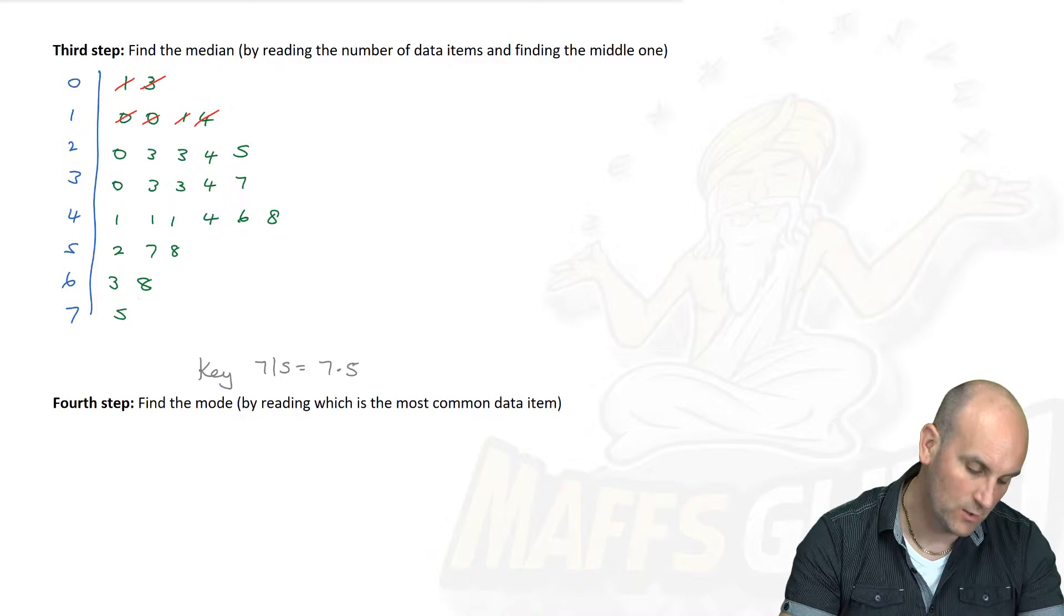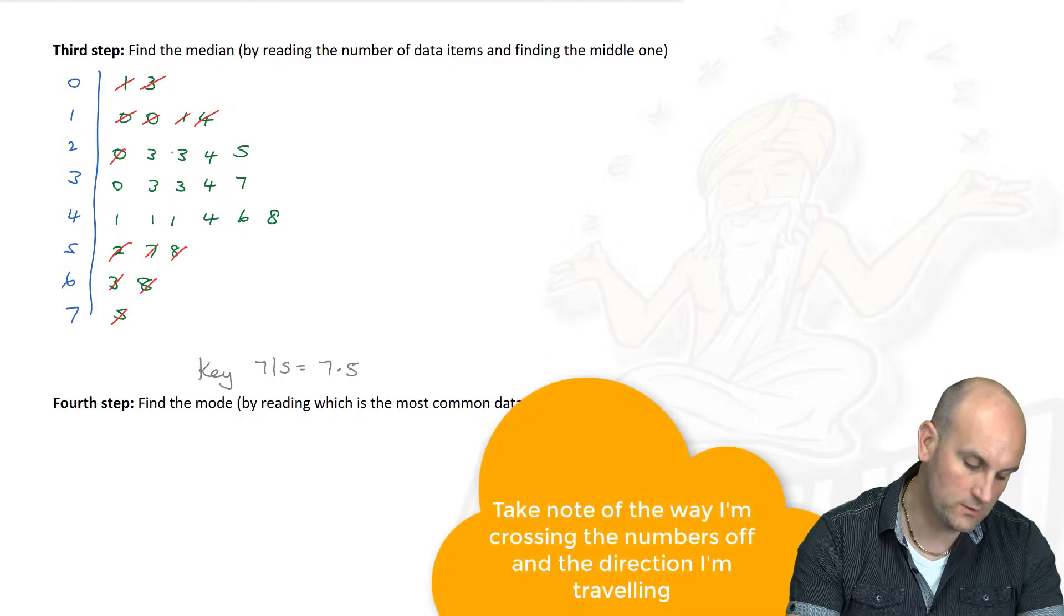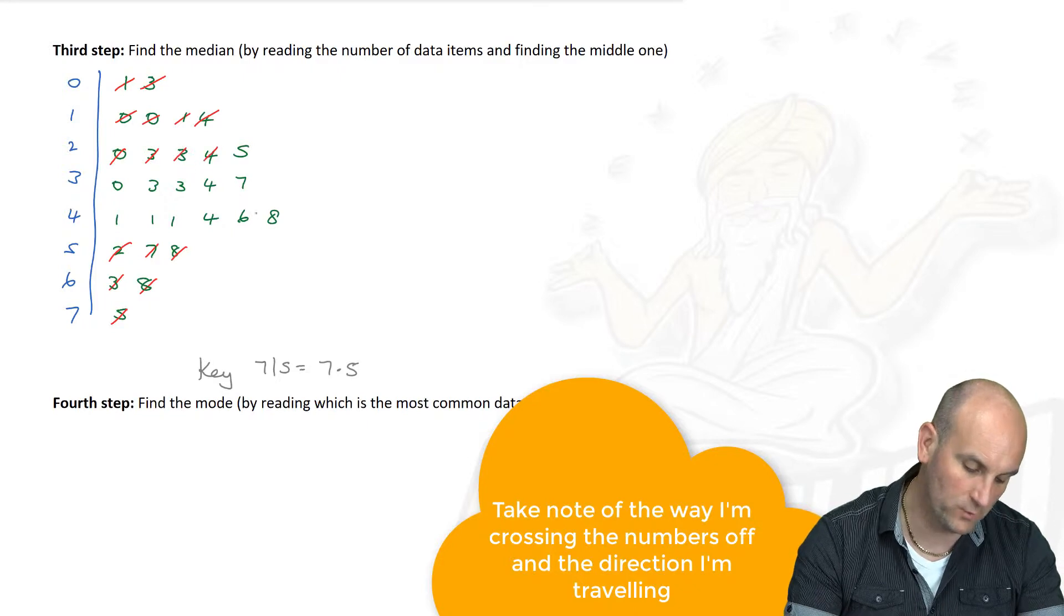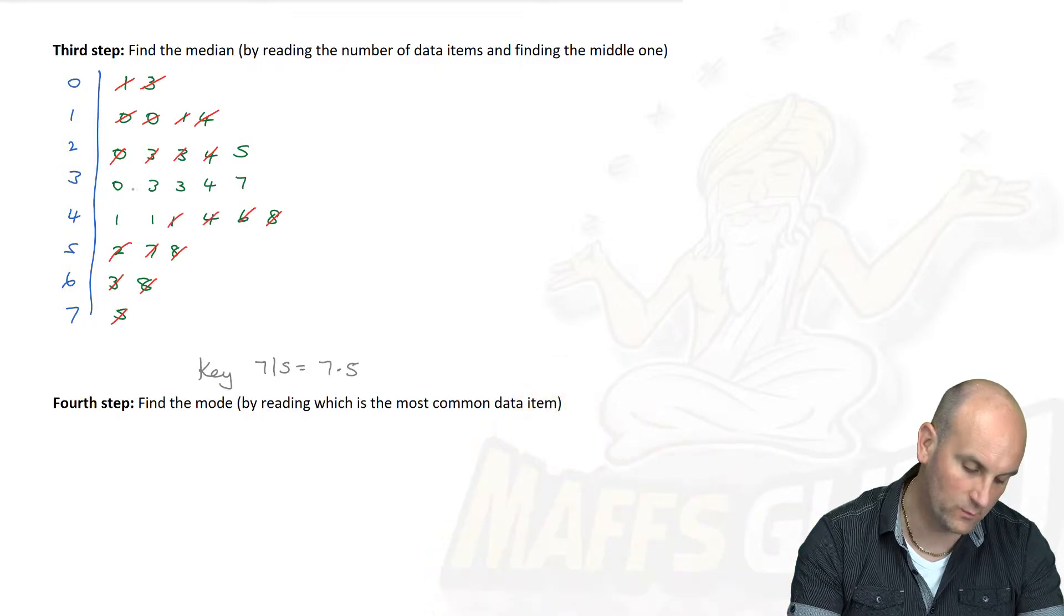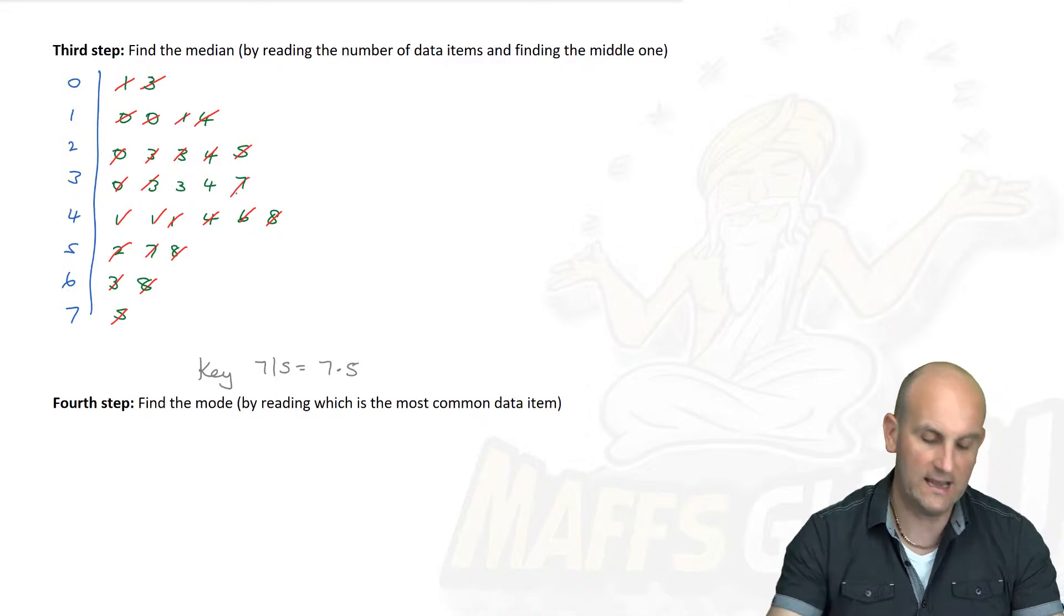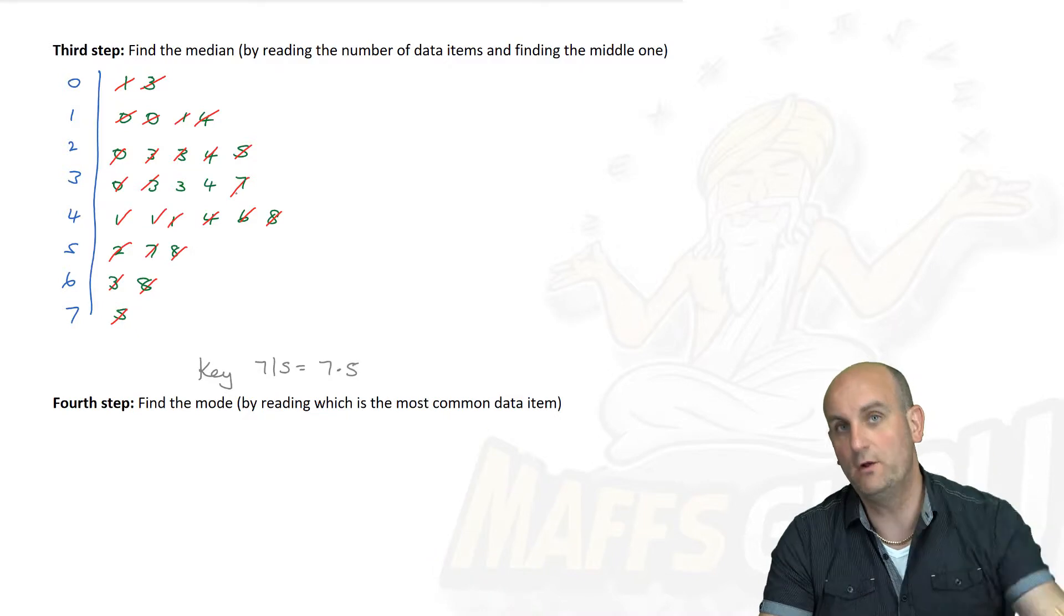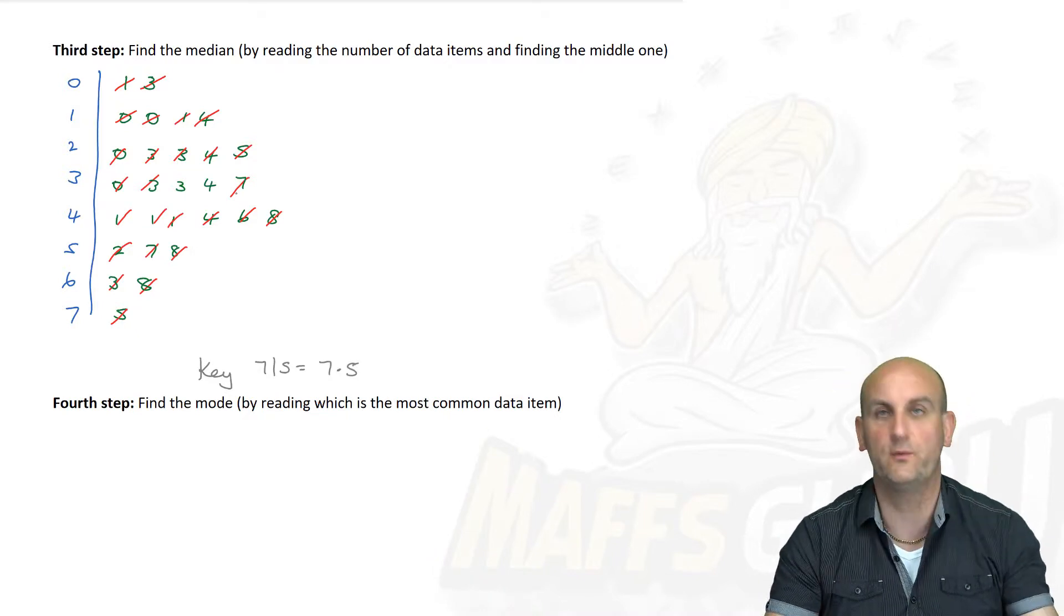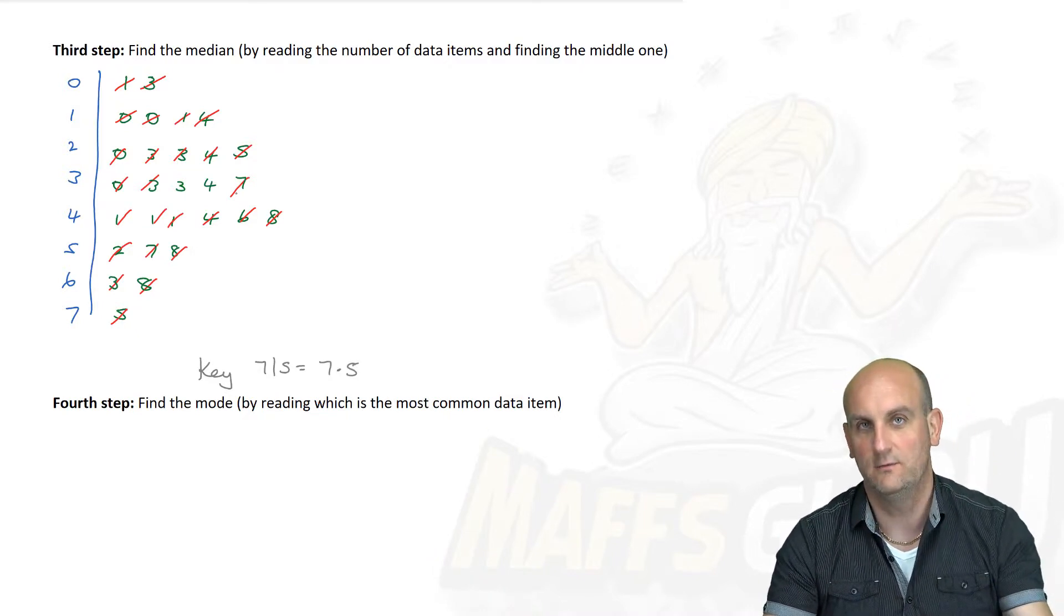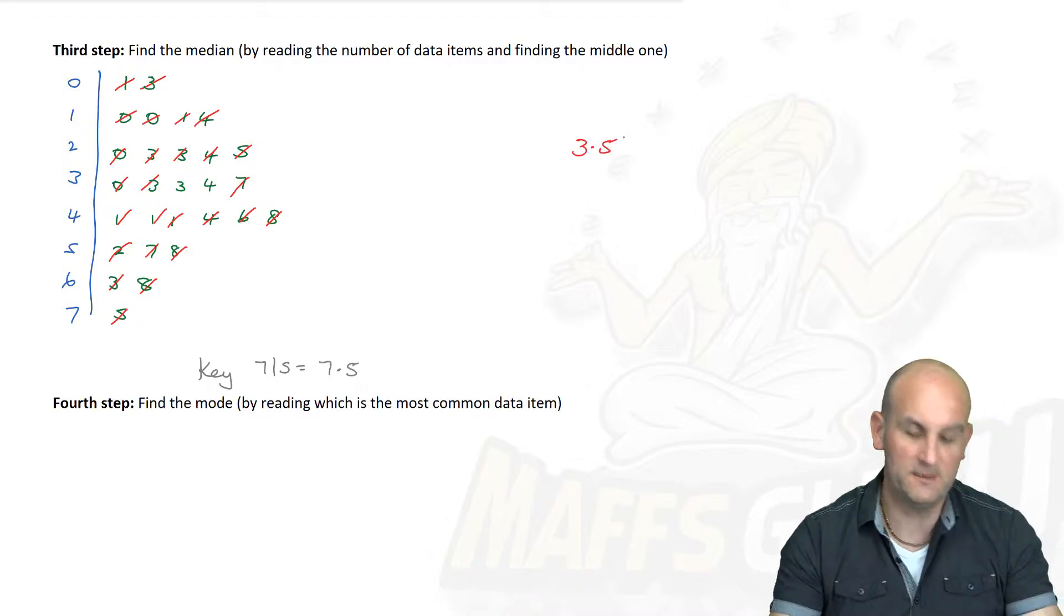So 1, 2, 3, 4, 5 and 6 off the front. 1, 2, 3, 4, 5, 6 off the back. Continue until I have two middle numbers. I'm looking for halfway between 3 and 4. That's 3.5. So my median must be 3.5.